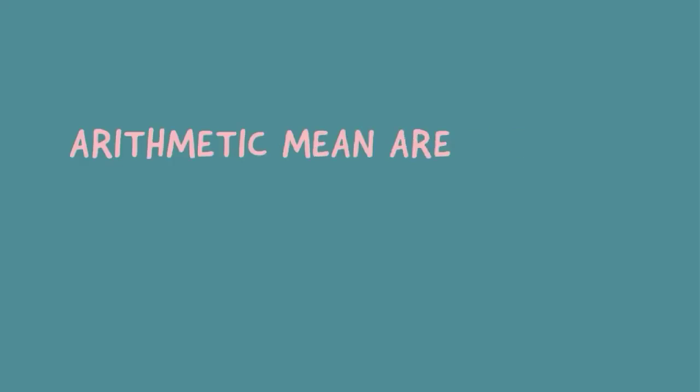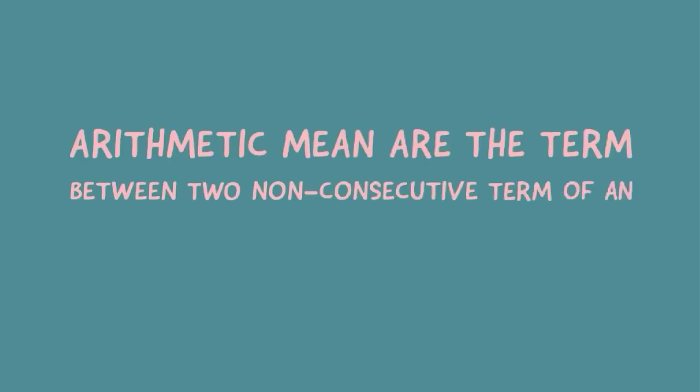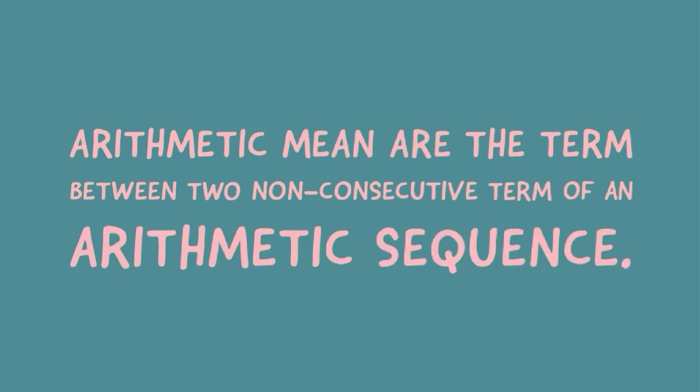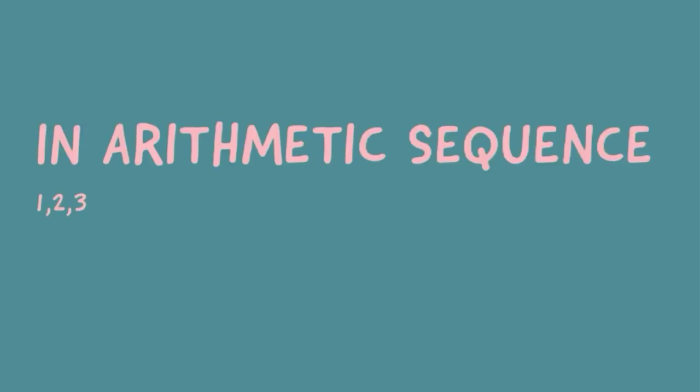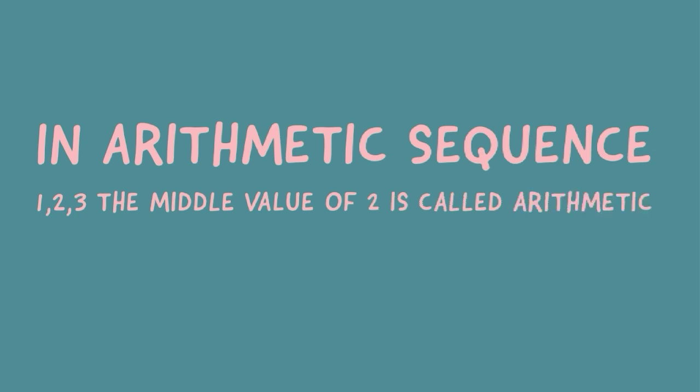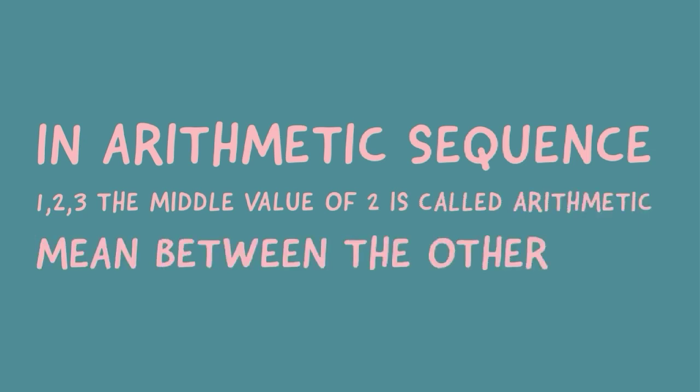Now we proceed to our next topic, which is also part of arithmetic sequence: finding the arithmetic mean. What is arithmetic mean? Arithmetic means are the terms between two non-consecutive terms of an arithmetic sequence. In the arithmetic sequence 1, 2, 3, the middle value 2 is called the arithmetic mean between the other two.